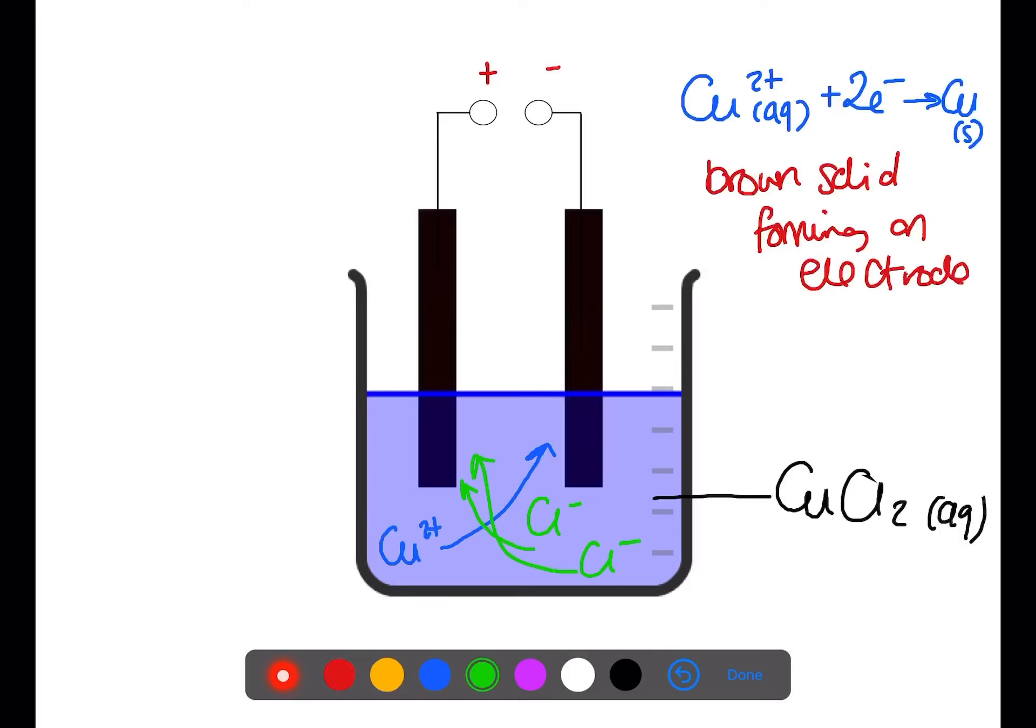At the positive electrode, the 2 chloride ions will lose their electrons that make them negatively charged ions to become chloride gas and 2 electrons. As we have a gas produced, we will see bubbles of gas at the electrode. You would also be able to smell the chlorine gas.